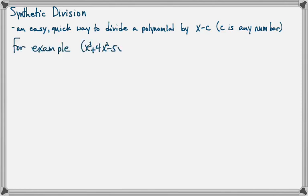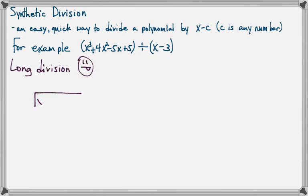So for example, let's look at x to the third plus 4x squared minus 5x plus 5 divided by x minus 3. And we're going to look at long division first. In this process, we put the polynomial under the division symbol, and we put the binomial outside.